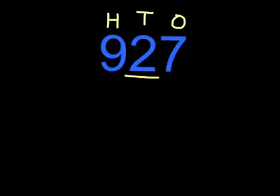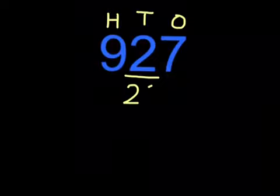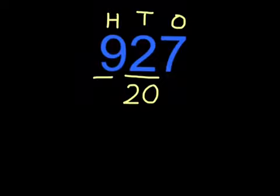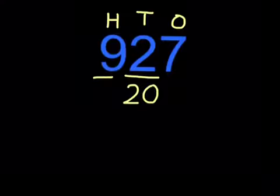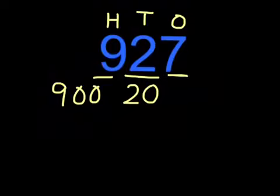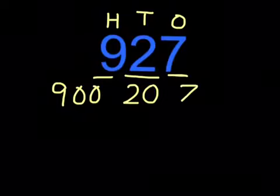Now we're going to look at breaking down a number into hundreds, tens, and ones without a hundreds, tens, and ones frame. I'm going to circle a number, and we're going to figure out what its value is depending on what position it's in. We can do a little H, T, and O here to show our hundreds, tens, and ones column. The two is in the tens position, so its value is 20. What is the value of the nine in this number? It's in the hundreds column, so its value is 900. So we've got 900 and 20, and then in the ones we have a seven. What is the value of the seven if it's in the ones column? That's right — it's seven.